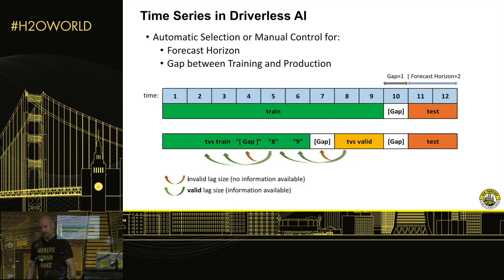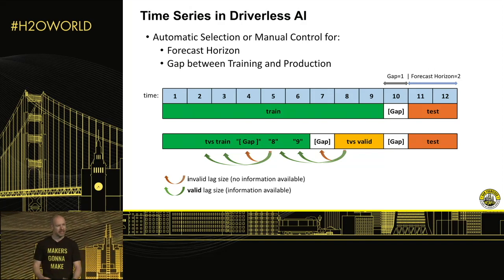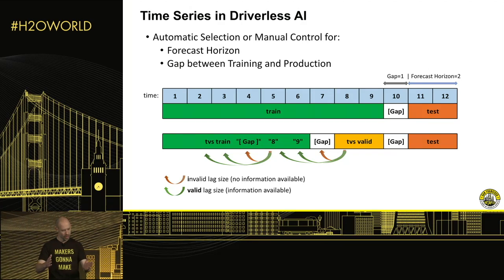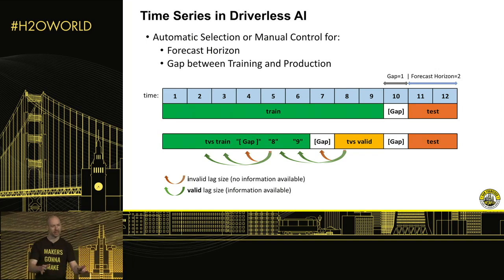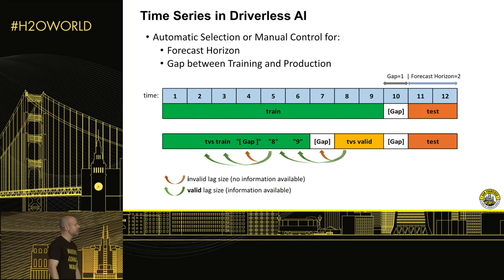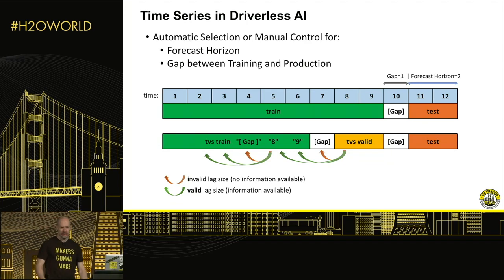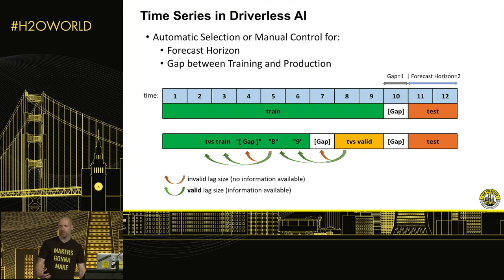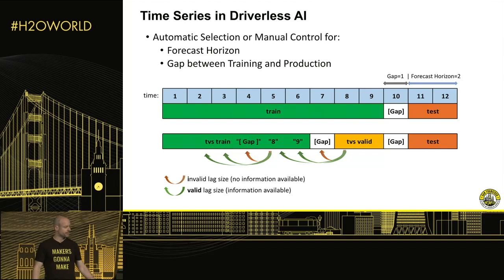For time series, you have to be careful about the validation scheme. You want to have multiple rolling windows — predict from a few months out, predict the next few weeks, then shift that over time. We handle all of that in the product so that you get confidence that your model can actually generalize into the future.